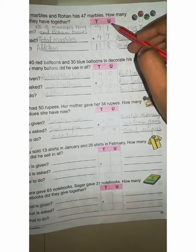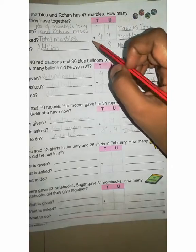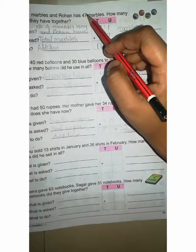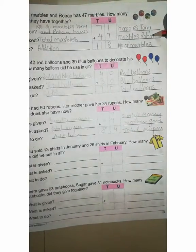Now you can see here, unit and tens given. Now first line, Tony has 71 marbles, write 71 marbles. First line, 71 marbles Tony. Now plus Rohan 47 marbles. Write 47 marbles Rohan.